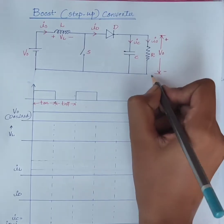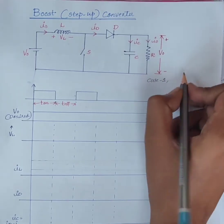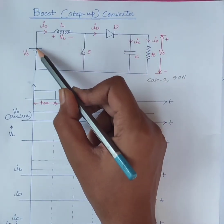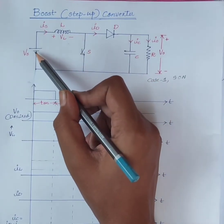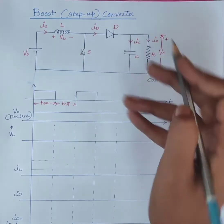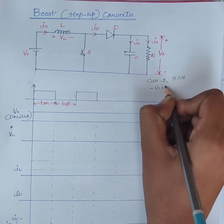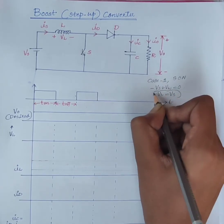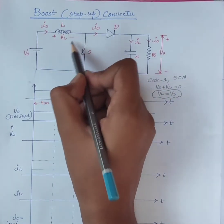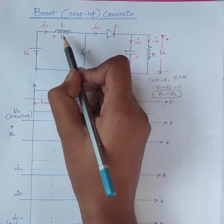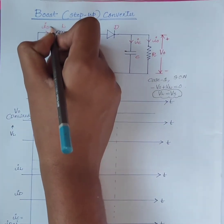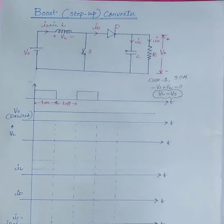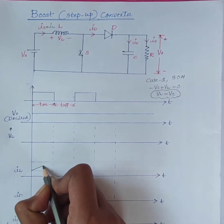Consider case 1: when switch is on. When the switch is on, the current flows through the path — input supply, inductor, switch, back to the source. By applying mesh analysis, we get: minus Vs plus Vl is equal to 0. Therefore, Vl is equal to Vs. During this time, the inductor stores energy and the inductor current Il increases gradually.